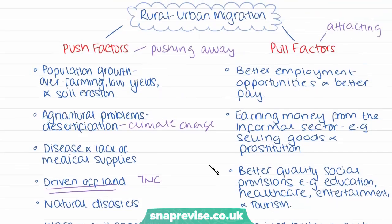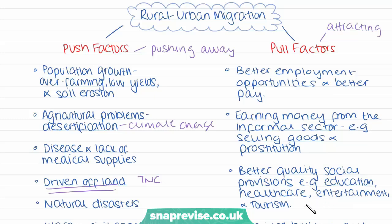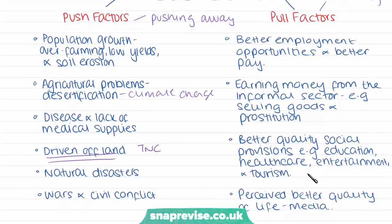Pull factors attracting people to cities include better employment opportunities and better pay — more employment in factories and service industries offers better-paid work than in rural areas, and there is an increasingly high demand for unskilled labour in cities. Earning money from the informal sector — selling goods on streets, providing transport such as taxis, or even prostitution — is also an opportunity. There are also better quality social provisions including education, healthcare, and entertainment. Most of all, there is a perceived better quality of life in the city, fed to rural people through media images that idolise the city, often pulling people towards moving there.